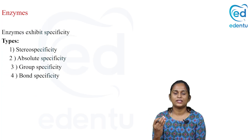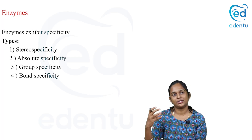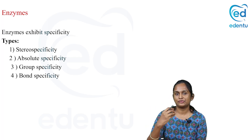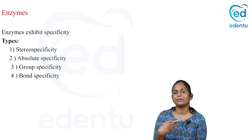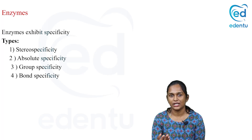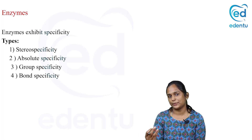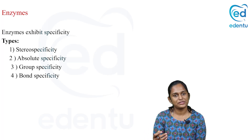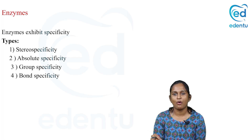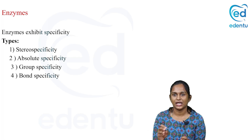What is specificity? The enzyme is specific for its substrate. There are four types of specificity: stereospecificity, absolute specificity, group specificity, and bond specificity.